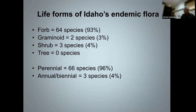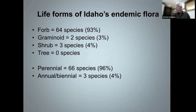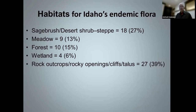Another way to look at the endemic flora is by life form. This slide clearly shows that the great majority of Idaho endemics are perennial forbs. We have no endemic trees in Idaho. Looking at it from a gross habitat perspective, Idaho endemics lean towards the dry end of the gradient versus wet, and rocky habitats are a really important contributor to Idaho's endemic flora.